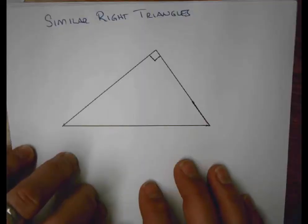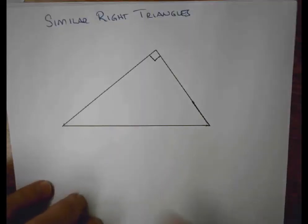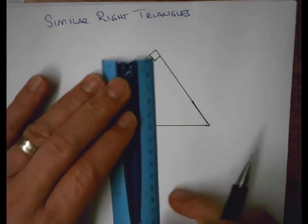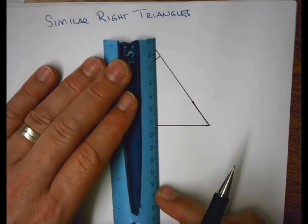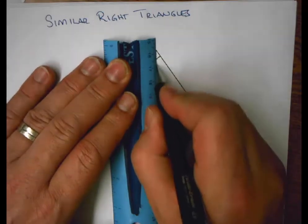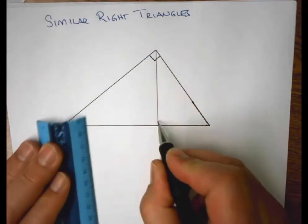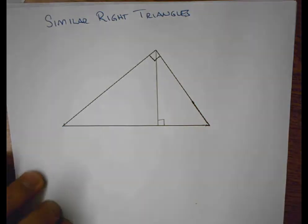So today we're going to be talking about similar right triangles, and specifically we're going to say if I have a right triangle and I were to drop an altitude—in other words, construct something that is perpendicular to the vertex here and yet perpendicular to the opposite side.